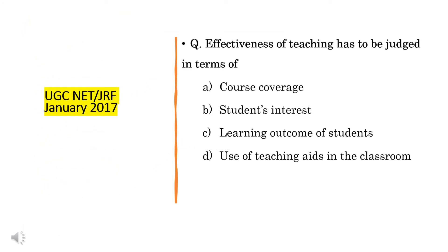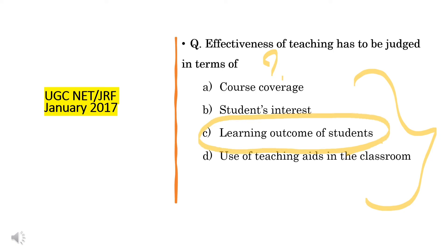Next question: effectiveness of teaching can be judged in terms of what? Options given are: course coverage, students' interest, learning outcome of students, and use of teaching aids in the classroom. Teaching effectiveness is judged always in terms of the learning outcome of the students. So the correct answer is option C. This question was asked in the 2017 exam.